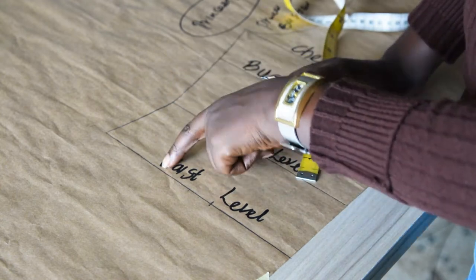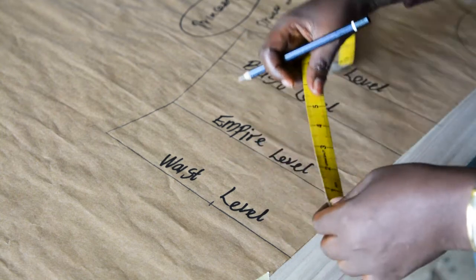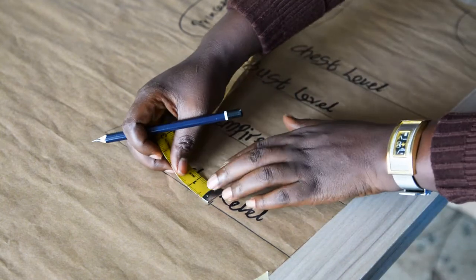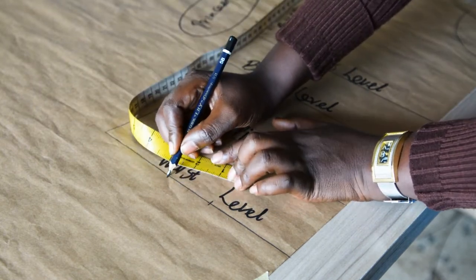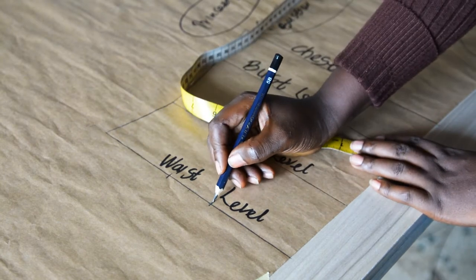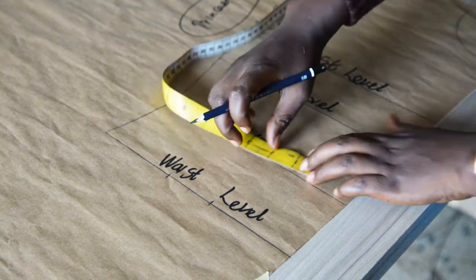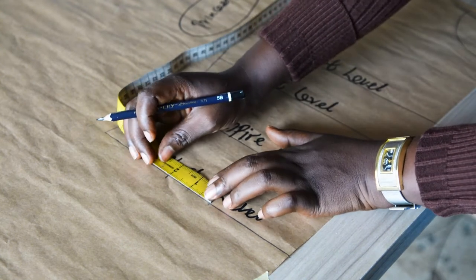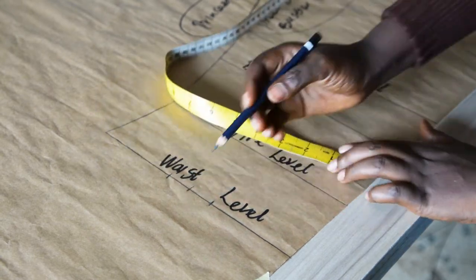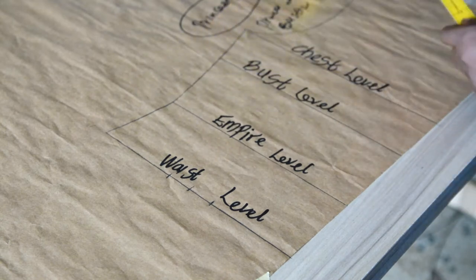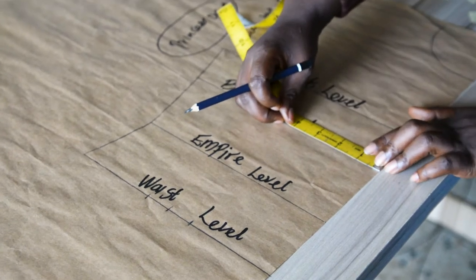From the ball span point, I will measure my dart intake. Because this is a princess dart bustier, I will be taking more than 1 inch for my dart — I will be using 2 inches on the waistline for my dart. This is my ball span point; from this point I measured my dart intake forward, which is 2 inches. Then I will get the midpoint. Then I will come to the bust level and insert the same ball span measurement, which is 3.5 inches.